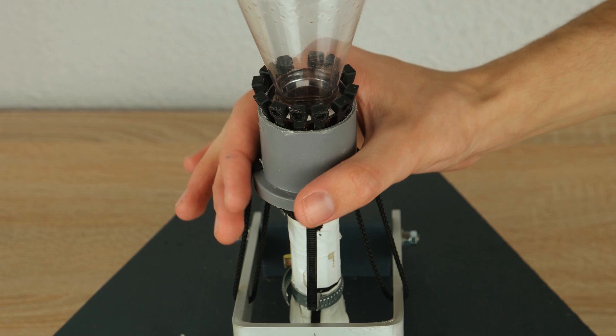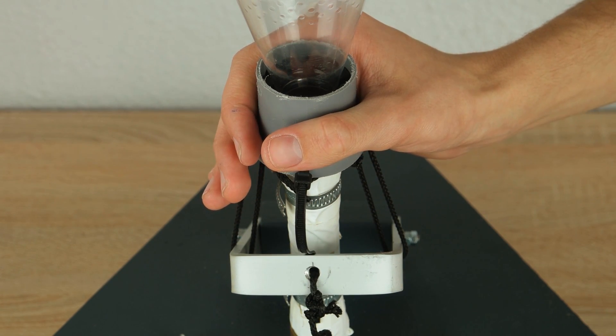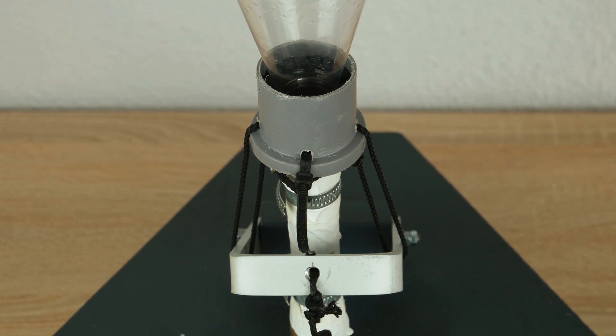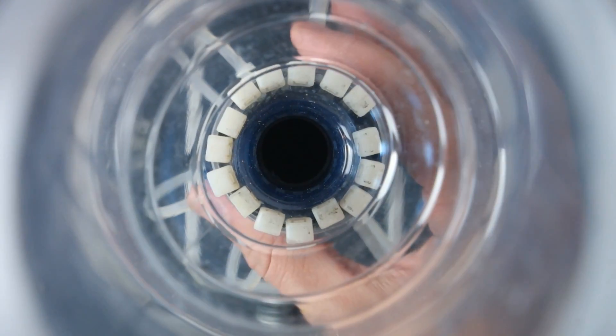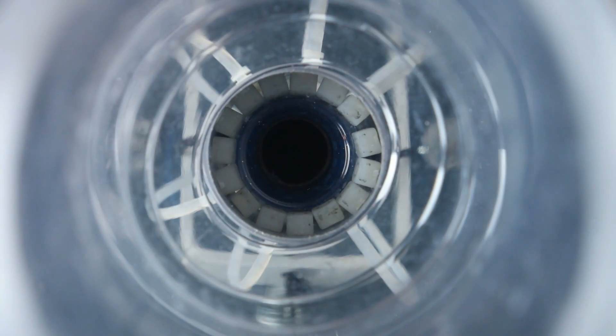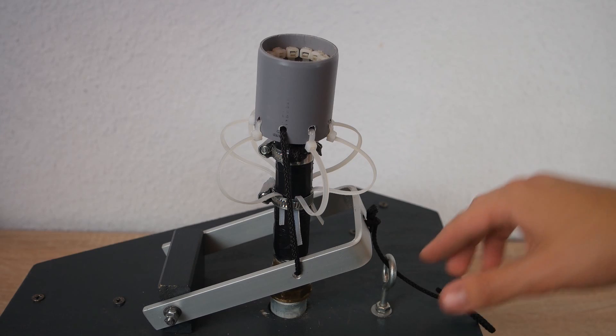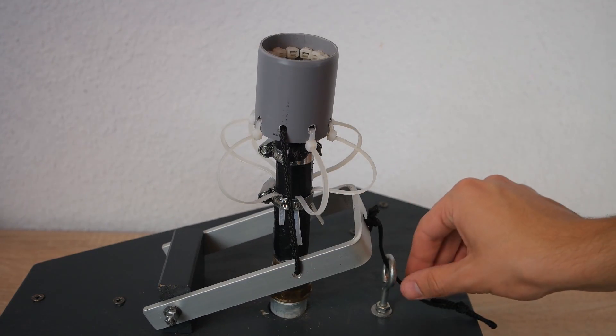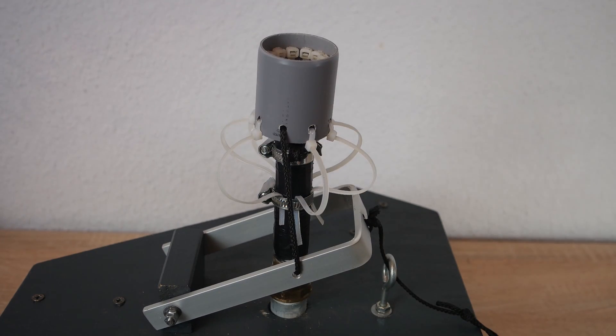Now only the trigger for the launch pad is missing. You can use a short PVC pipe, which you put over the connector and the rocket. As soon as you pull the PVC pipe down, the rocket will launch. To prevent an unintentional launch, we suggest using multiple cable ties as a spring.